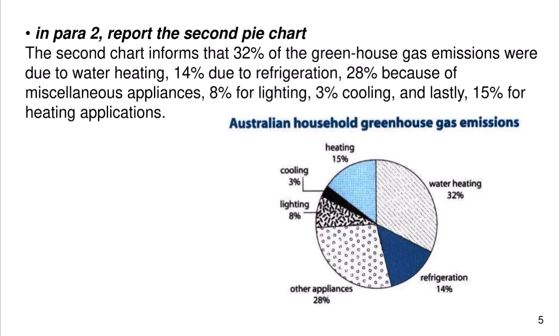In para 2, report the second pie chart. The second chart informs that 32% of the greenhouse gas emissions were due to water heating, 14% due to refrigeration, 28% because of miscellaneous applications, 8% for lighting, 3% cooling, and lastly 15% for heating applications.